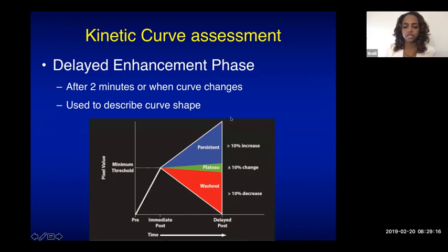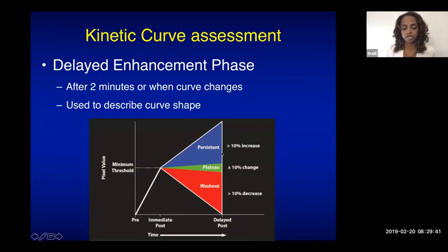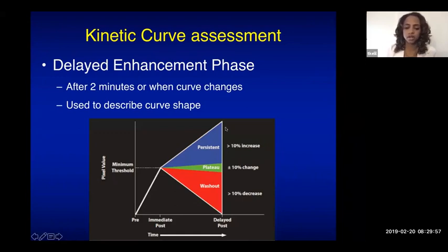In general, persistent enhancement kinetics are considered less concerning, while plateau and washout are considered suspicious. However, this is an overgeneralization — a malignancy may show persistent enhancement, and a benign lymph node may show plateau or washout kinetics. Kinetic curve assessment must be considered together with morphology and distribution; you cannot base your assessment on kinetics alone.